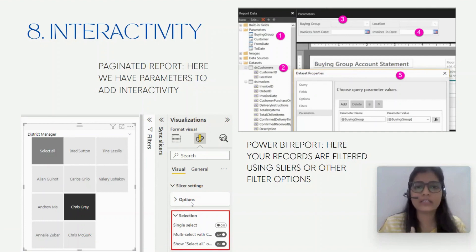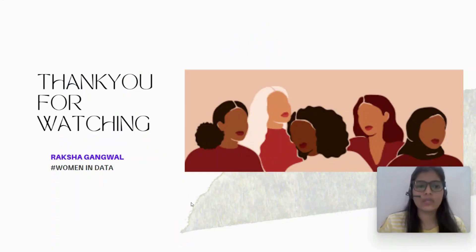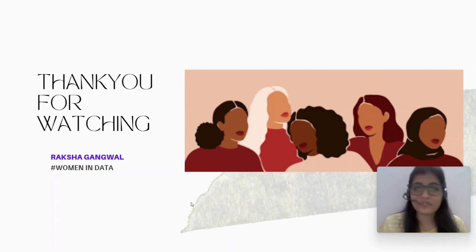Next is interactivity. In Power BI reports you have edit interactions and slicers to interact with the report, but in paginated reports they have parameters to interact with the report. I hope this was useful — if you have any other differences please drop them in the comments below. Thank you for watching.